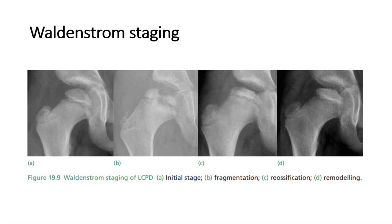As shown in picture A, the second stage is fragmentation, which is present from around 6 to 12 months of the disease and is often associated with clinical symptoms. Radiographically, the epiphysis will show fragmentation with alternating areas of sclerosis and fibrosis, and it may begin to collapse in height.